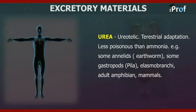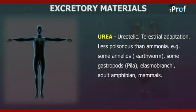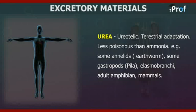Elasmobranch fishes, adult amphibians, and mammals are all examples of ureotelic animals.